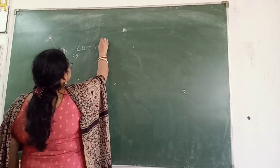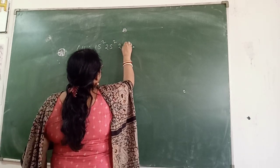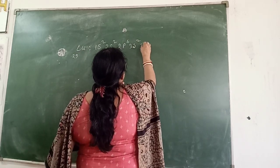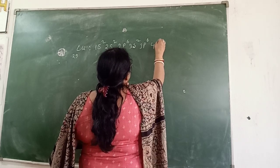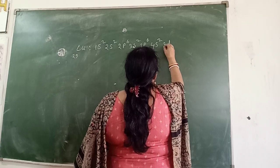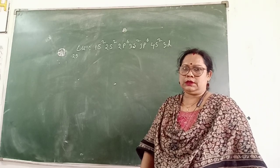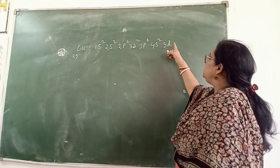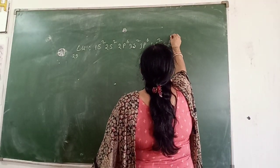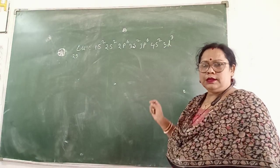1s2, 2s2, 2p6, 3s2, 3p6, 4s2, 3d9. The d subshell can hold 10 electrons, but here we need only 9 electrons — that is short of 1 electron.